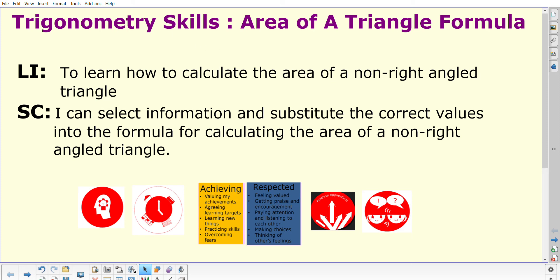We're going to start the National 5 Trigonometry Skills Unit, and the very first part is learning how to calculate the area of a non-right-angled triangle. We'll be looking for you to be able to select the correct information and substitute the correct values into the formula for calculating the area of a non-right-angled triangle. This formula is given in the formula list.